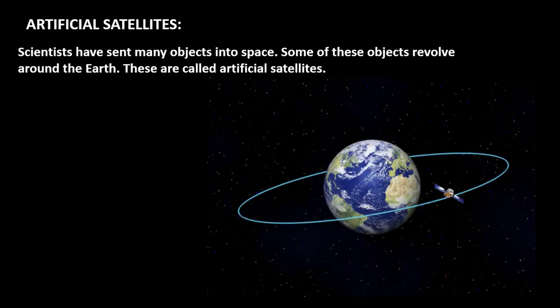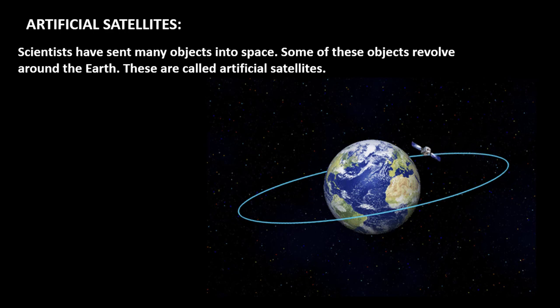What are artificial satellites? I told you that artificial satellites are man-made satellites. Scientists have sent many objects into space. Some of these objects revolve around the Earth, and these are called artificial satellites. As shown here, this is an artificial satellite that is made by scientists and it is revolving around the Earth.